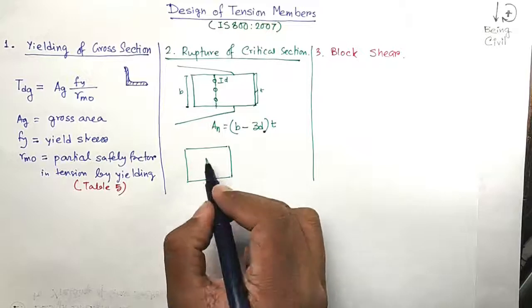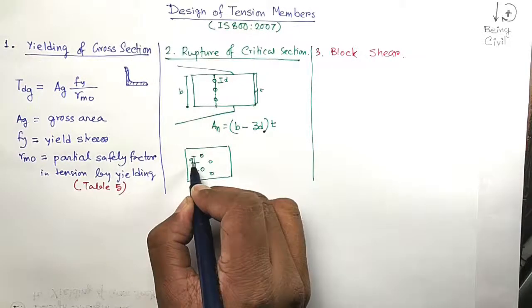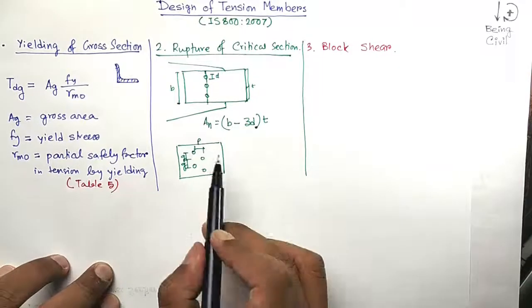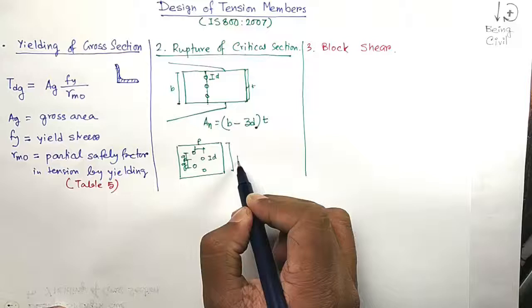This distance is called gauge distance. This is called pitch for the staggered arrangement. This diameter is D, this is B, thickness is T.